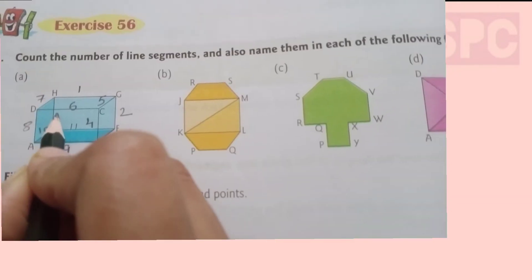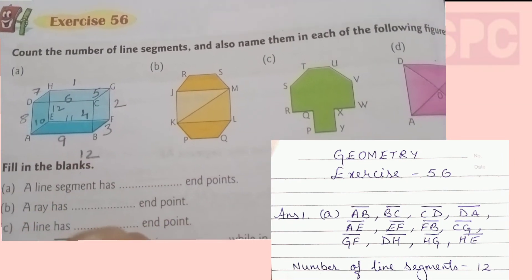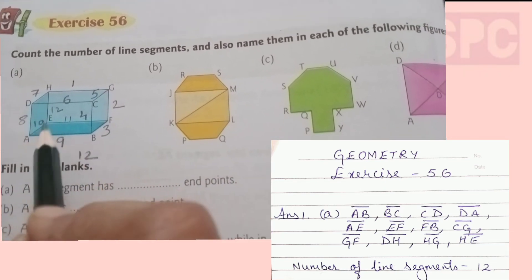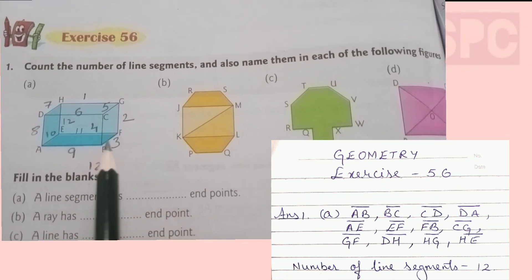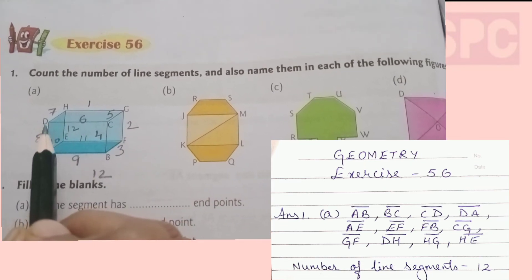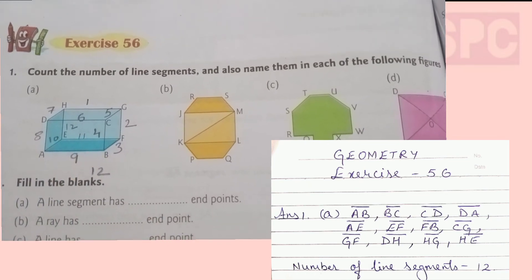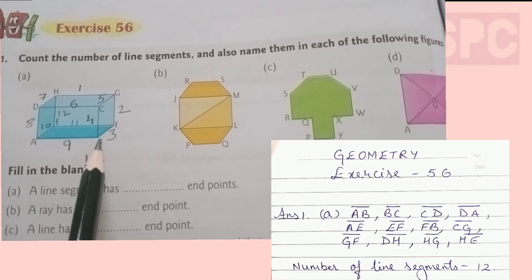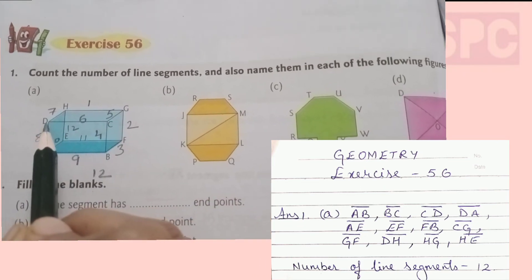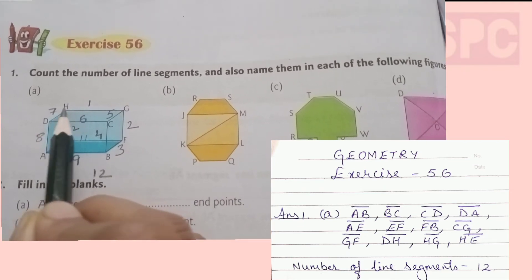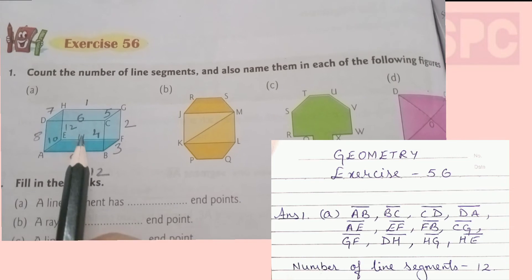Once the numbering is done, you will find there are a total of 12 line segments in figure A. We will also name all the line segments: AB, BC, CD, DA, DH, GG, GC, GB, BF, FG, and so on. Whenever you write the name of a line segment, draw the line segment symbol on top — write AB with a line above it.